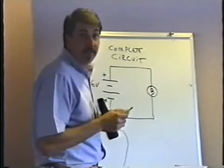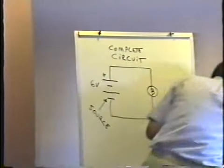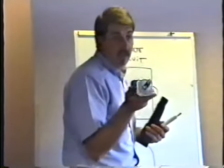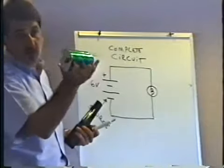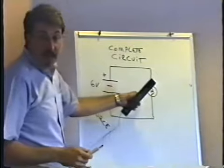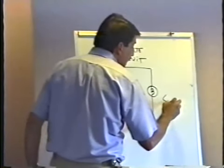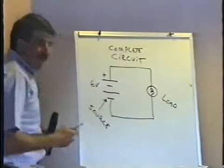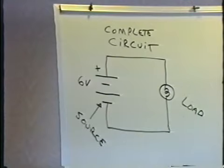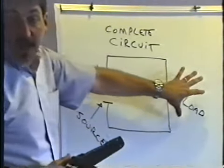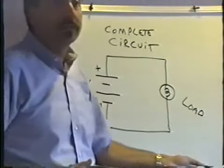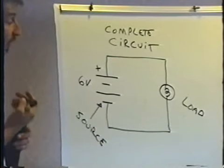Then you need something that's using the power from the source. If I just have a battery with nothing connected to it, that's not a circuit — it's just the source. In order to have a complete circuit, you need something that's going to use the power from the source, and we call that the load. In a video game or pinball machine, the load is the logic board — or for a pinball, also the coils, which is actually a whole separate circuit.